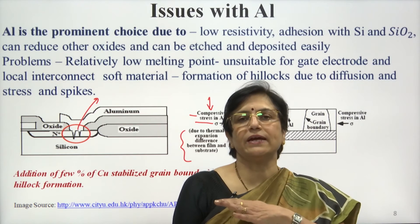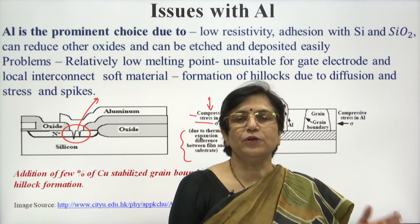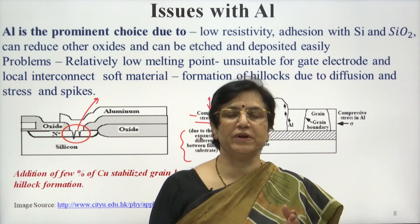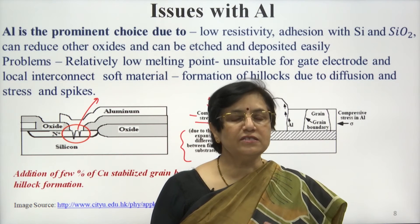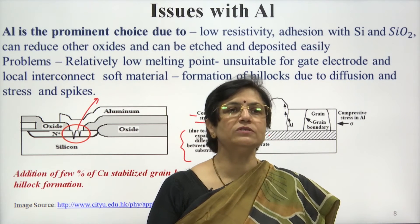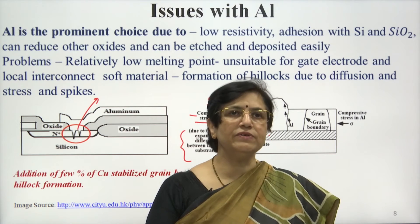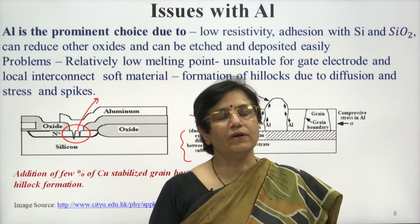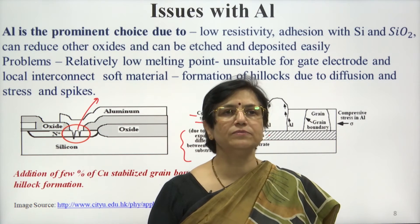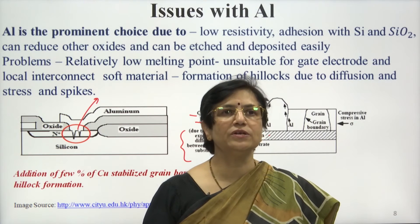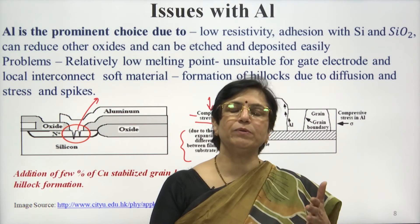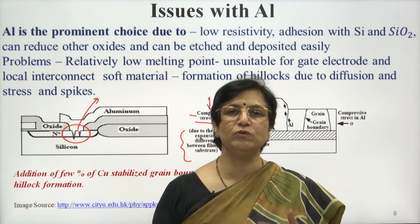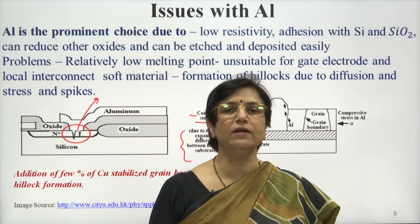Once we have the planarized surface, we have seen that during metallization, till the 1970s, aluminum was the most preferred material. The choice of aluminum was due to its low resistivity, adhesion with silicon as well as silicon dioxide, its ability to reduce other oxides, and the fact that it can be very easily etched as well as deposited.